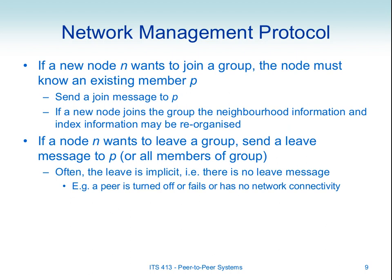Once it knows one other peer, it sends a generic message to that peer saying 'I want to join the network.' Assuming that's accepted, the new peer exchanges information with existing peers. For example, P5 may send a message to P2 saying 'I want to join the network'; if acceptable, P2 may tell P5 about some of the other peers it knows about. Similarly, if a node wants to leave a group, it normally tells another peer it's leaving, and those peers can update their index information to keep track of who's in the group.